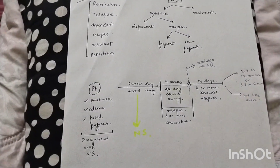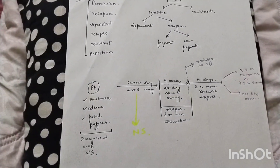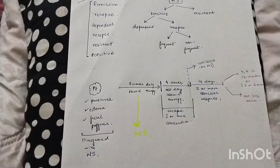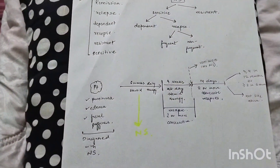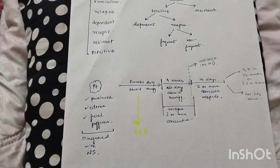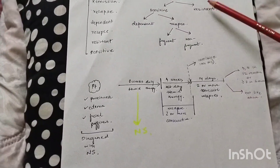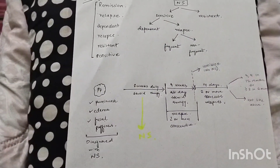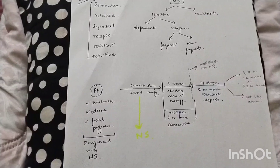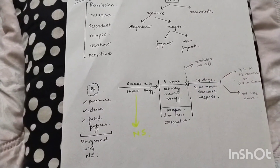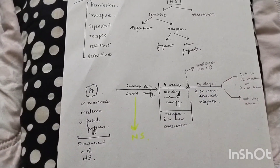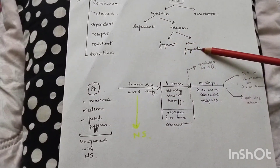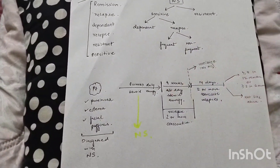In easy language, steroid dependent means the disease is fine as long as steroids are being given — the disease is dependent on steroids. Steroid relapsing nephrotic syndrome means the patient was fine for some days but then the disease comes back — there are relapse episodes. Relapse is again of two types: frequent and non-frequent relapse.